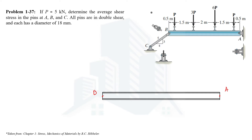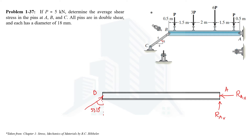At point A we have a hinge support, so there are two reactions: the vertical reaction RAV and the horizontal reaction RAH. At point B we have a pin support, and because of the pin support there will be only one reaction in the direction of member BC. Using the right-angle triangle and the tan theta formula, we get an angle of 53.13 degrees. So the support reaction at point B acts at 53.13 degrees from the vertical, and we'll represent that reaction as RBC.